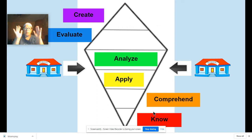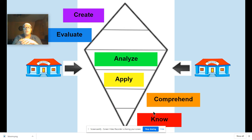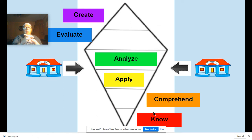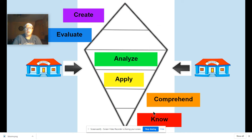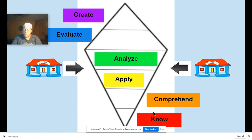The levels still go from knowledge to creation — no new levels — but the shape of the kite directs your attention to the middle of the taxonomy. In the flipped model, whether in person or online, the majority of your time with students should be on the application and analysis of their knowledge, because that is where having you as their partner is most valuable. If they're at home by themselves and have a question, they can't raise their hand and ask for your help.